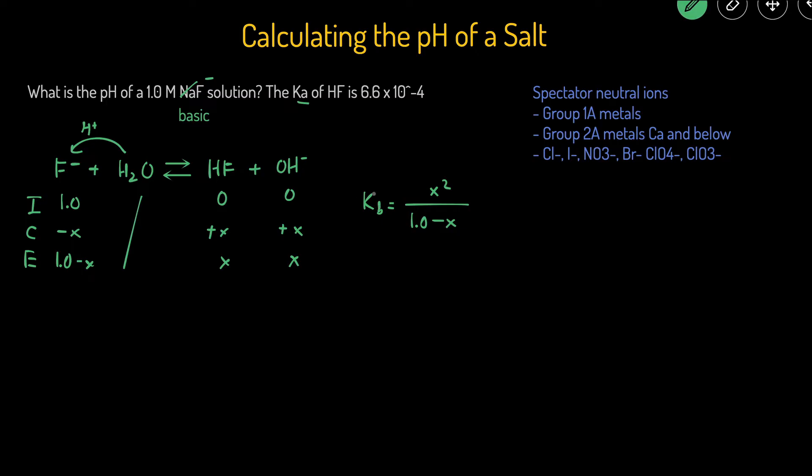But we have the KA, we don't have the KB. So to calculate the KB, we can use this equation. KA times KB equals 1.0 times 10 to the negative 14.